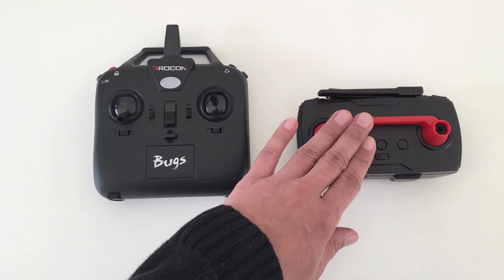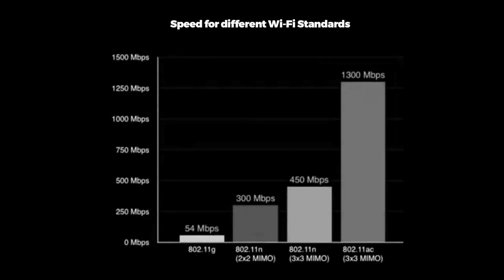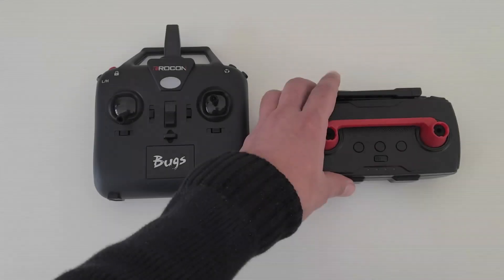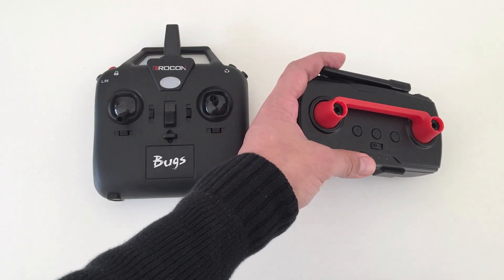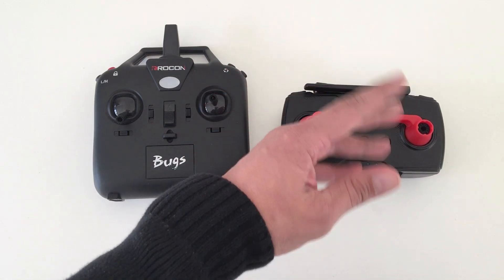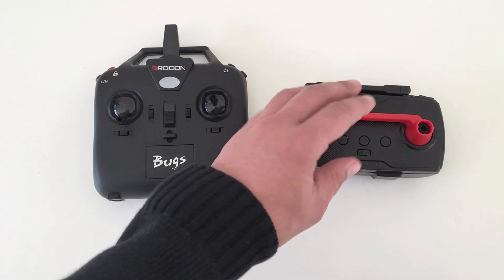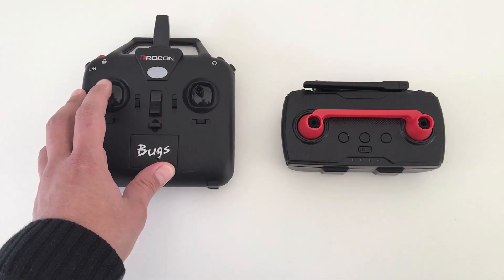With a 5G or 5.8 GHz capable transmitter, you're going to get better bandwidth, and that serves its purpose for FPV video streaming live via the drone and transmitter. You're going to get smoother, less pixelated footage — it's optimized for that.